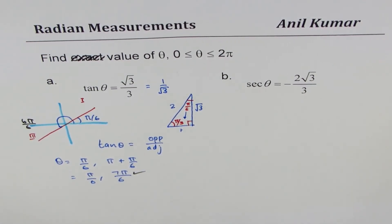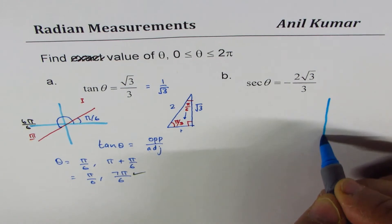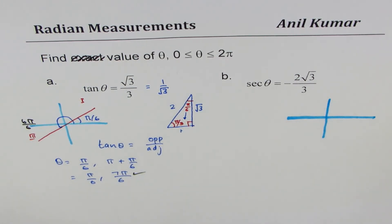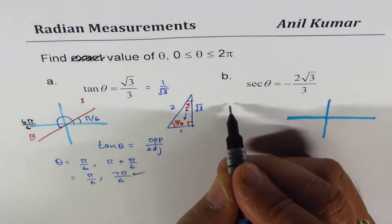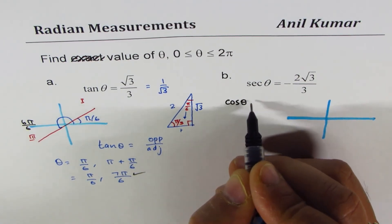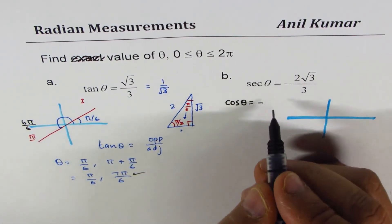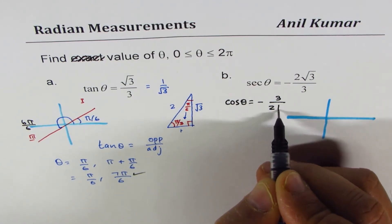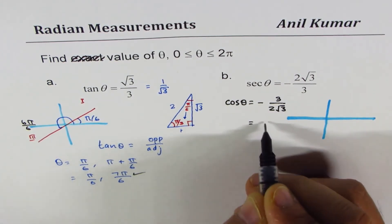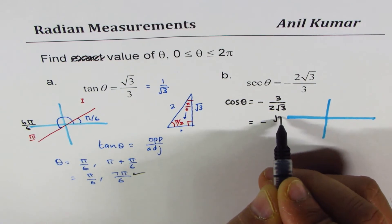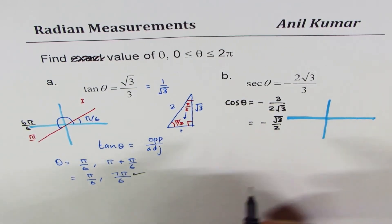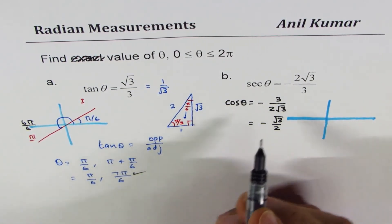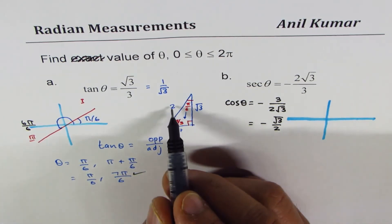The last example involves secant, which is the reciprocal of cosine. So we treat this as cos θ = minus the flipped value, which is minus √3/2. Looking at the special triangle, cos is adjacent over hypotenuse, and the value √3/2 corresponds to an angle of π/6.